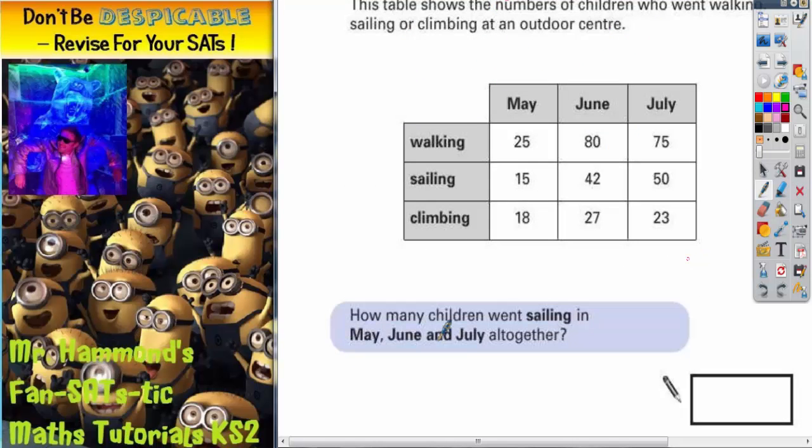The first question is: how many children went sailing in May, June, and July altogether? We're only interested in sailing, so we're only interested in the sailing row. In the sailing row for May we've got 15, for June we've got 42, and in July we've got 50.